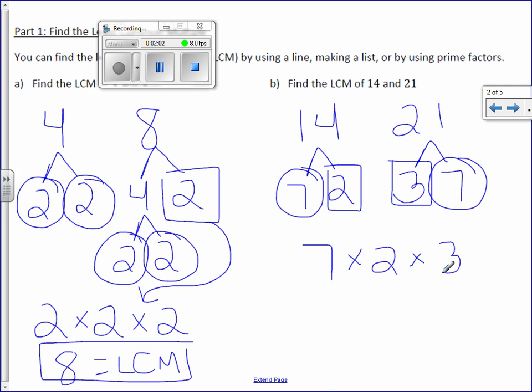7 times 2 is 14. And 14 times 3, we'll do that off to the side. 3 times 4 is 12, carry the 1. 3 times 1 is 3, plus 1 is 4. So our LCM is 42.